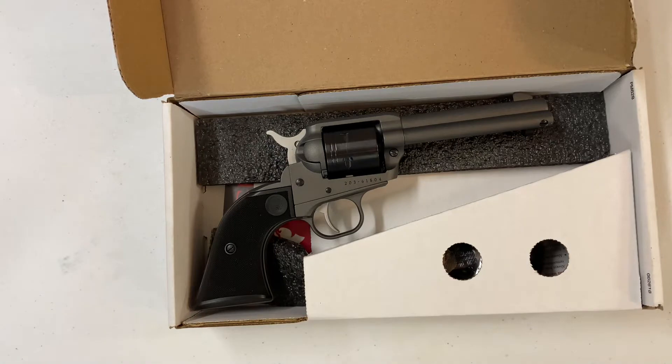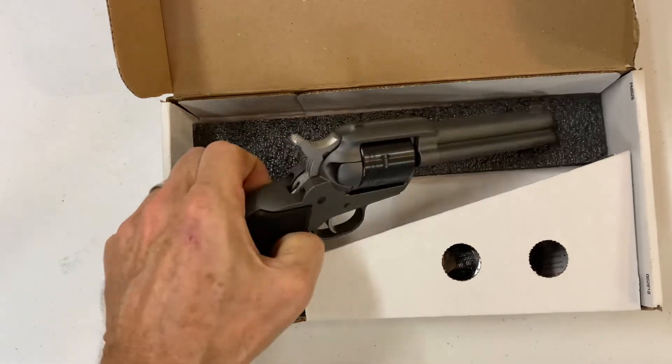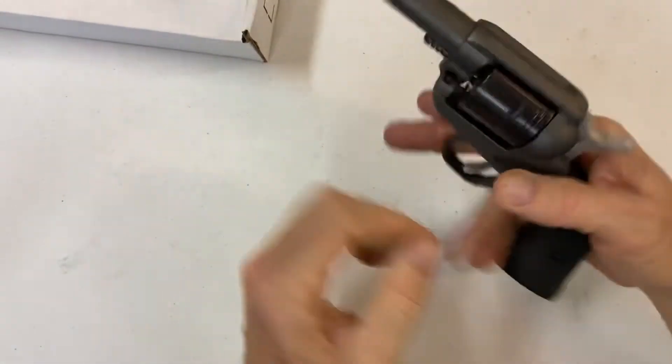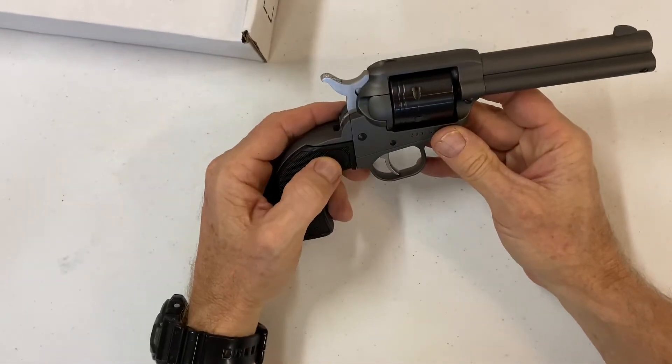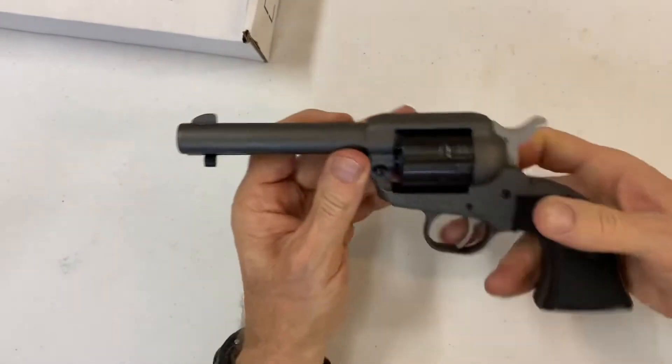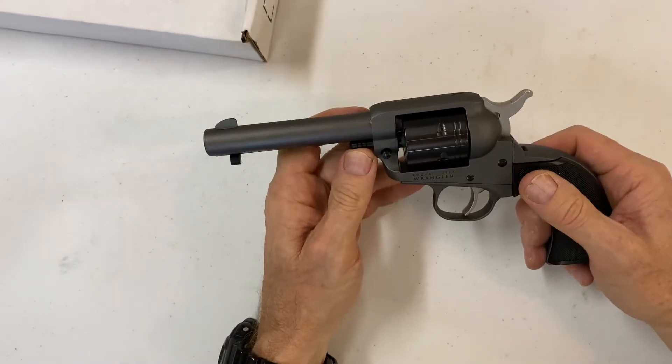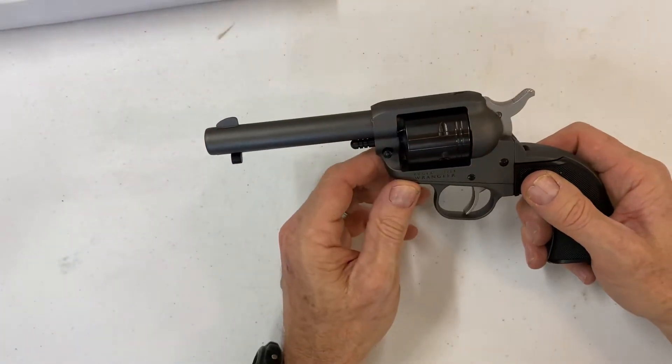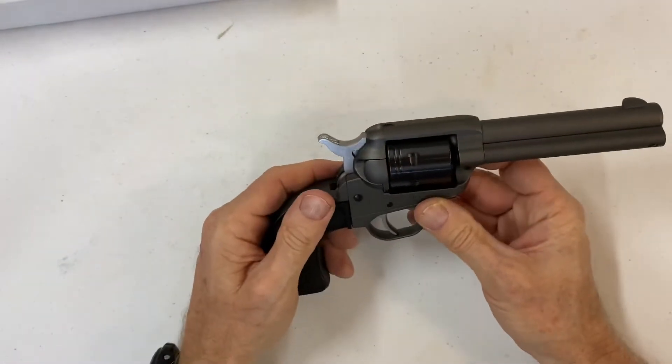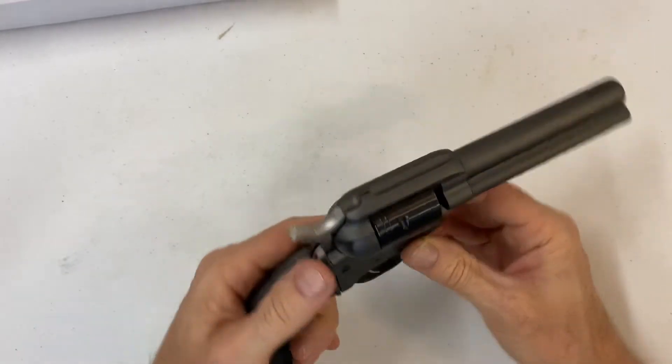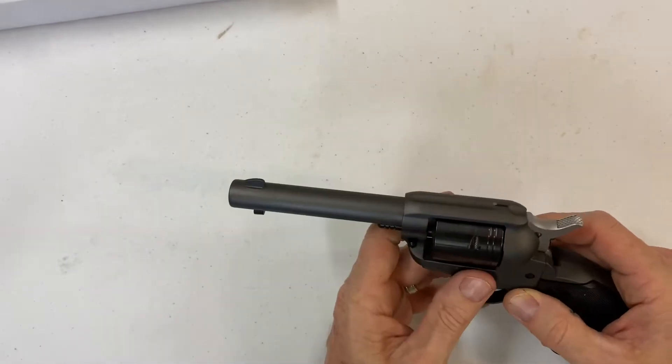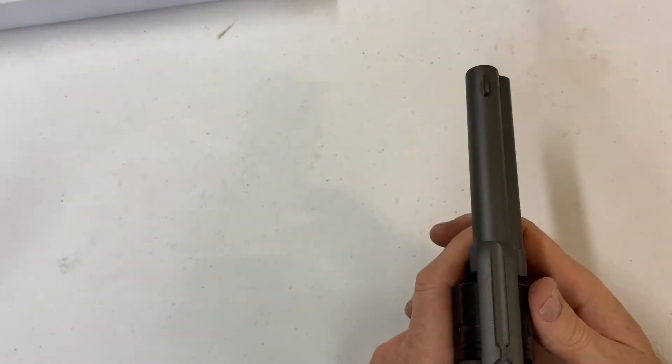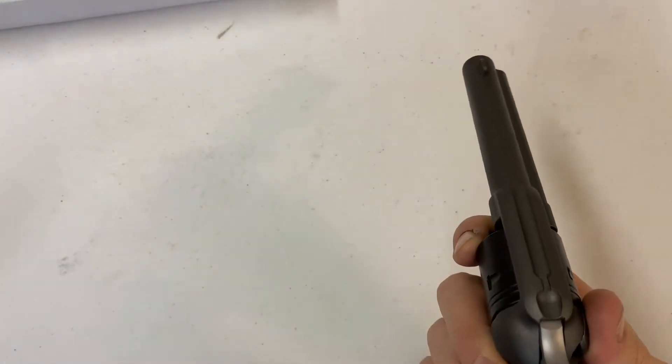Okay, this is the Ruger Wrangler. These things come in many different colors. When I was going to buy this, I actually wanted to get the copper one, but I bought this during the height of the pandemic and there was no inventory on anything. I found this one in tungsten, which is pretty cool, and it's got a four and three-quarter inch barrel. It's got thick sights grooved in here, so you're not doing any adjustments.